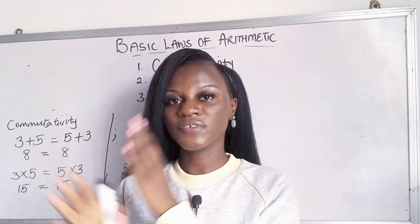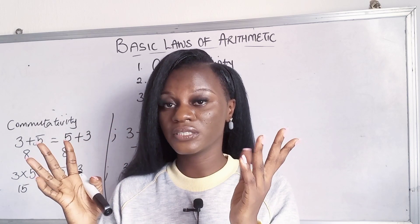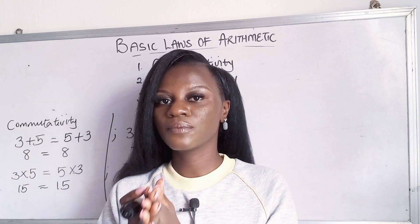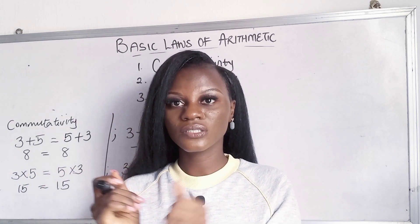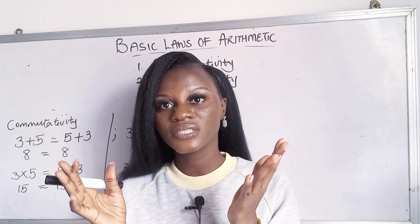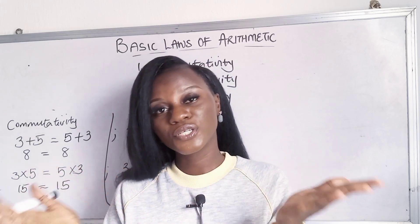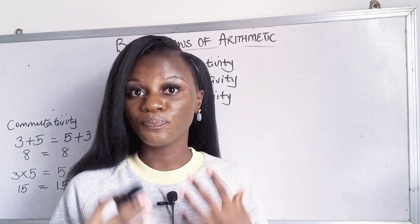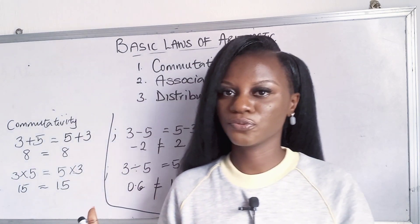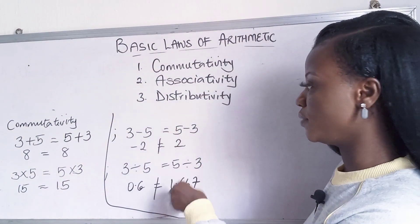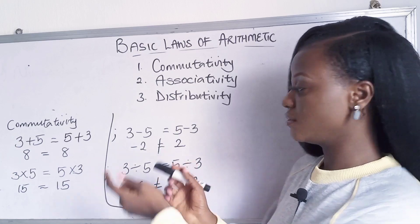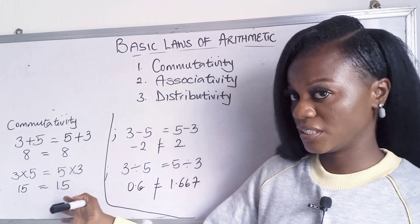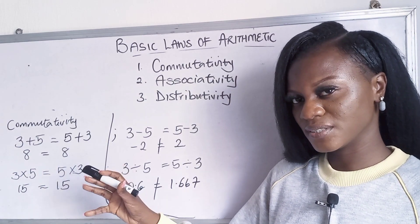Commutativity is about reversing the numbers. So if you say 2 plus 3, it's the same as saying 3 plus 2 — interchanging the numbers with addition still gives you the same answer. 2 plus 3 is 5, and 3 plus 2 is also 5. Only addition and multiplication obey the commutativity rule. Division and subtraction don't obey it because when you reverse them, you don't get the same answer.